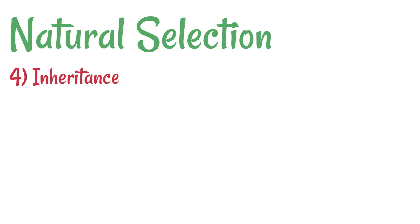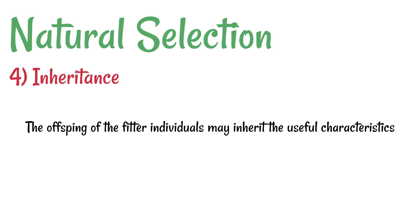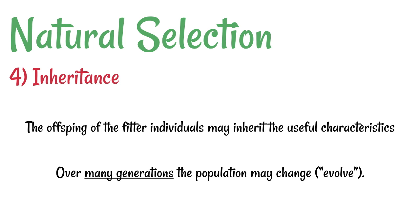Lastly, inheritance. The offspring of the fitter individuals may inherit those useful characteristics. If this process goes on over many, many generations, then we could say that the population will evolve — basically meaning that it will change to have more of a certain characteristic. So over hundreds and thousands of generations, an organism might adapt to have a longer neck to be able to reach food higher in the canopy.